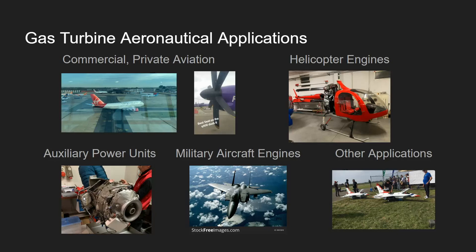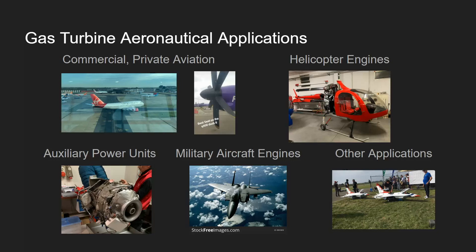Military aircraft almost always use turbofans — for example, the F-15 Eagle is powered by two turbojet engines. There are also more exotic applications: RC jet aircraft powered by turbojets, and even turbojets installed on gliders to extend their range so pilots don't have to land in a field if conditions turn poor. So there are some fascinating exotic aeronautical applications of the gas turbine.